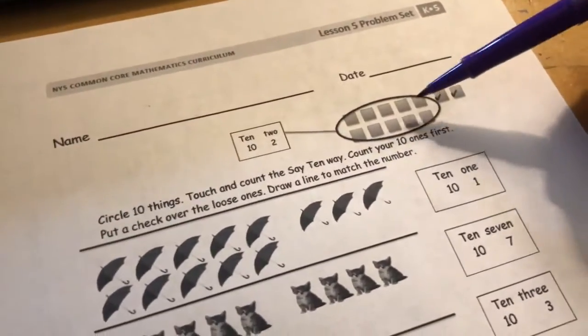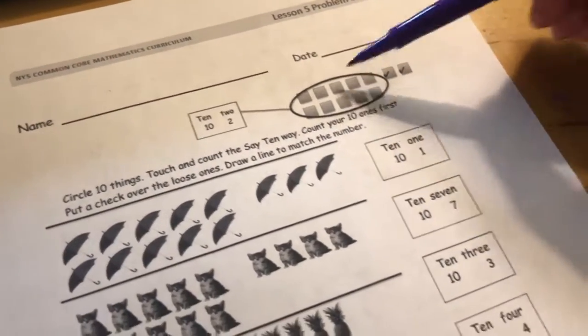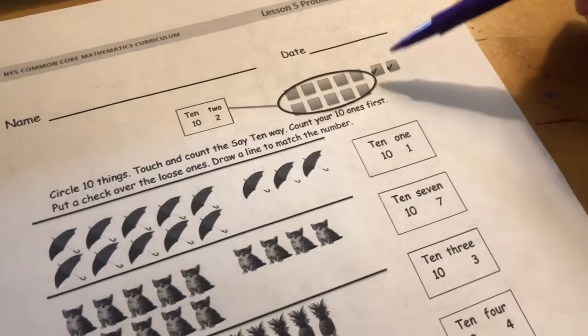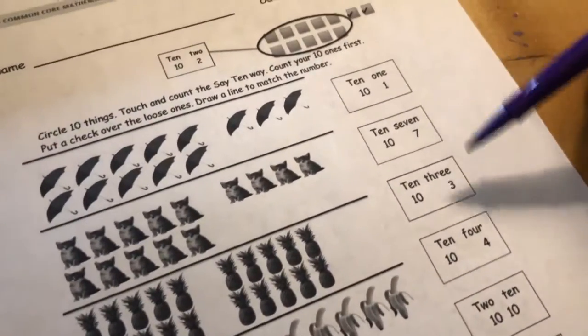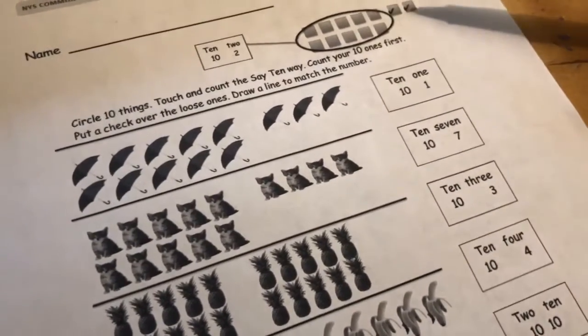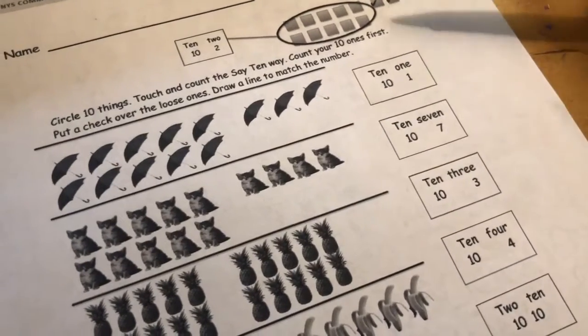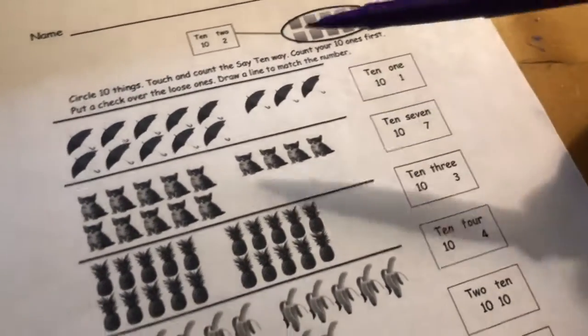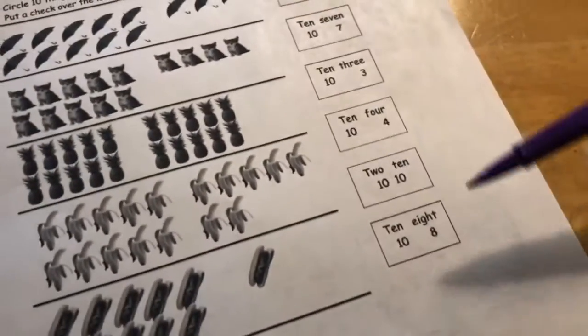We are still working on groups of 10 and some 1s. So we're going to be finding a group of 10 and 1s and thinking about how we would match that up with both words and numbers and keep thinking about how this connects to teen numbers, thinking about the 1 as a group of 10, and then in the 1s place, that's our some 1s. So on this problem set, you're matching pictures to the words and numbers over here.